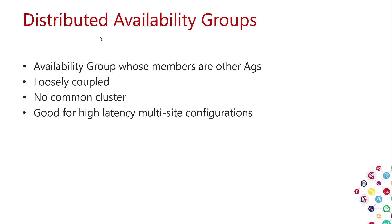You can also daisy-chain AGs with distributed AGs — one AG from site one to site two, and another from site two to site three. Another advantage over wide-area links is that instead of sending updates directly to each replica in the remote site, you send one update to the remote forwarder, which fans it out to the other replicas at that site.